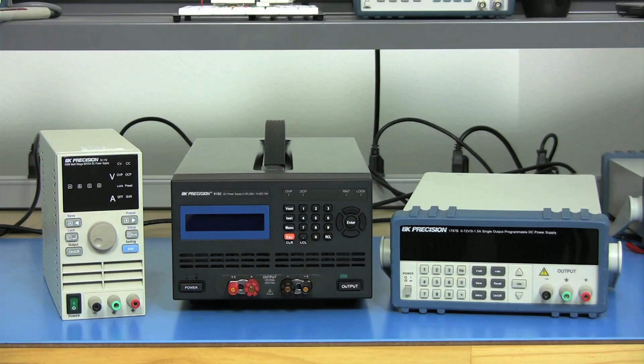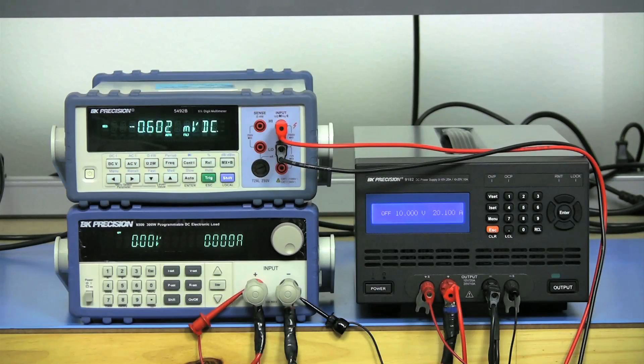Good regulation will help ensure that the power coming out from the power supply is steady and well regulated for sourcing power to sensitive devices. I will use a BK Precision 9182 DC power supply and an 8500 DC electronic load and a 5492B 5.5 digit multimeter to set up for load regulation testing of the power supply.